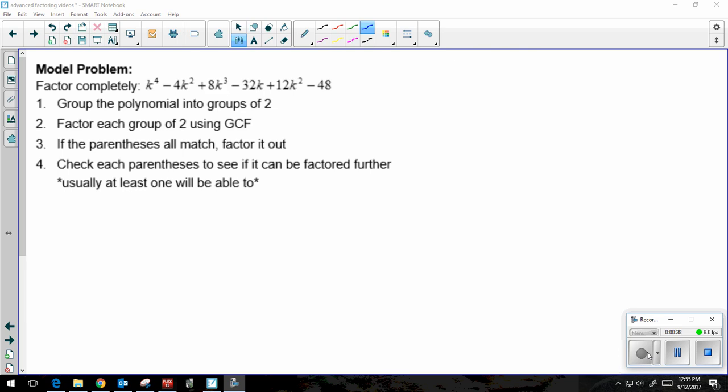So I'm going to follow the steps that are listed here. I'm going to group the polynomial into groups of two, so you can use parentheses or underlines, whatever you want to do to help you. Then I'm going to factor each group of two using GCF.